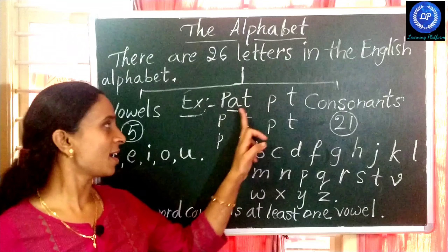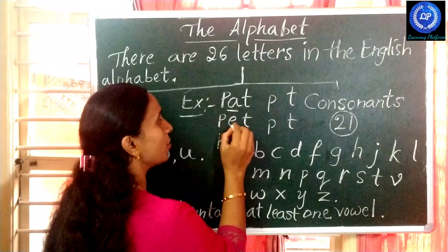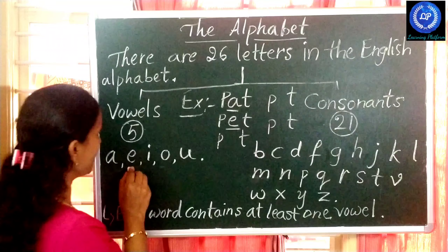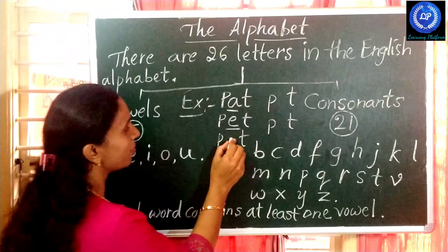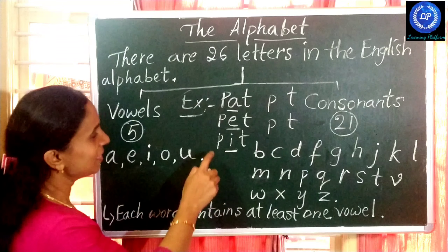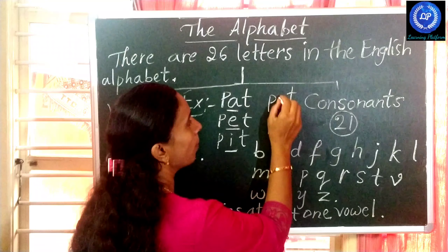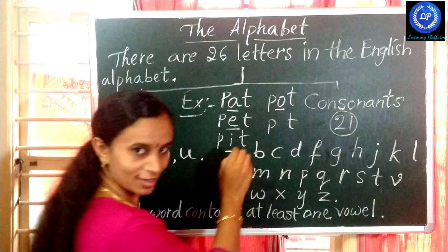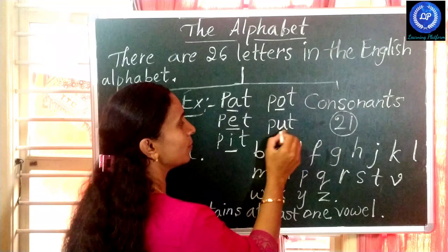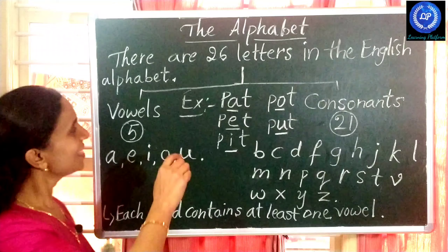Without vowels, you cannot pronounce a word. See: first vowel A — Pat. Second vowel E — Pet. Third vowel I — Pit. Fourth vowel O — Pot. And last one, U — Put.